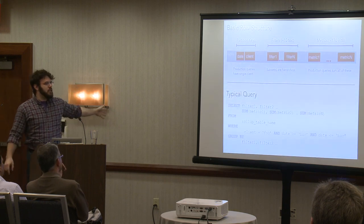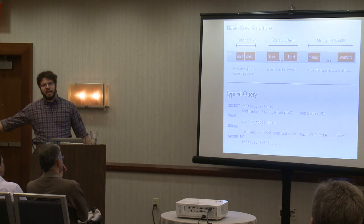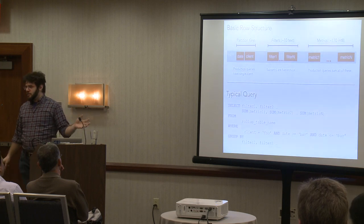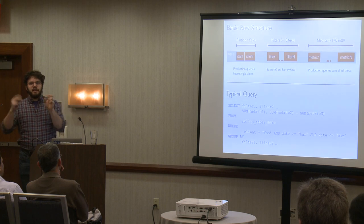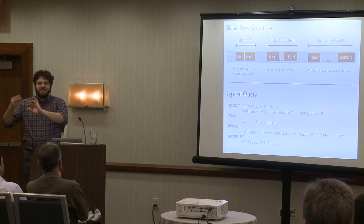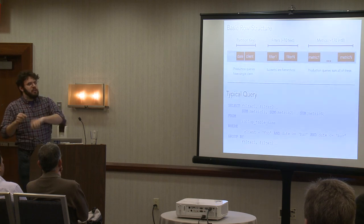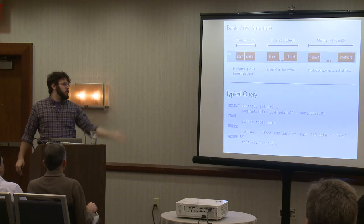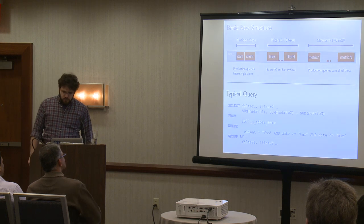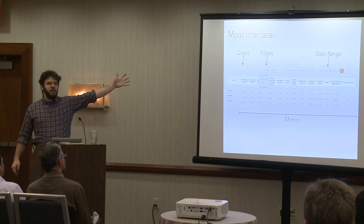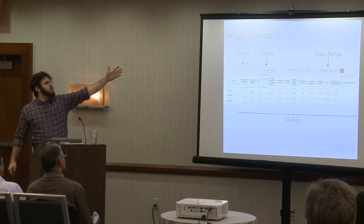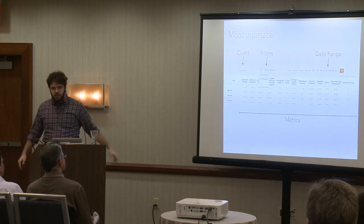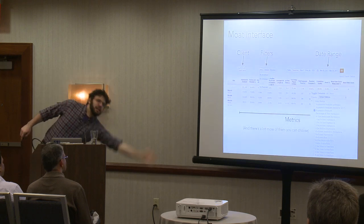A typical query might look like: select a couple of filters, sum metric one through metric N. By the way, we select all of our metrics on every one of our interface queries, basically. We do the sum of all the metrics and the interface gets to figure out which ones go together in the right way. If not all of them are showing, they're easily cacheable. They all have a client and a date range, and then we group by our filters.